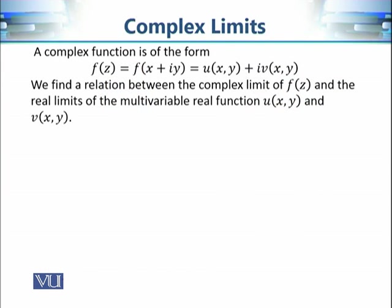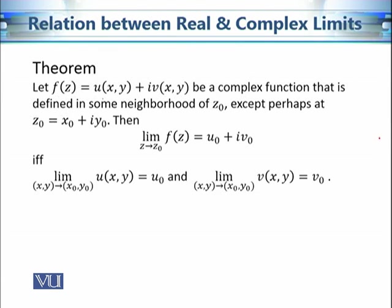In this discussion, we are going to prove that result. We have seen that a complex valued function can be written in the form u(x,y) plus i·v(x,y). With these notations, we can state the following result: this function has limit u₀ plus i·v₀ as z approaches z₀ if and only if the limit as (x,y) approaches (x₀,y₀) of u(x,y) is u₀, and the limit of v(x,y) is v₀.